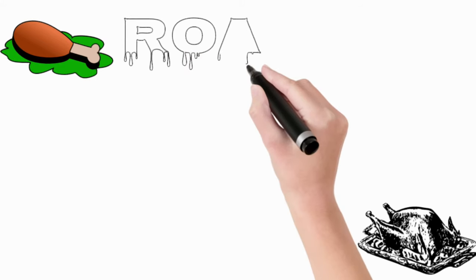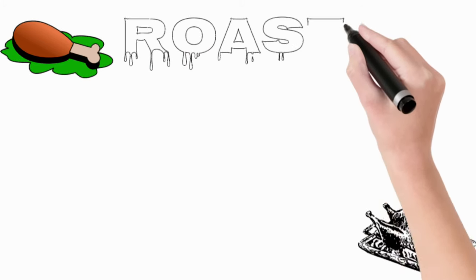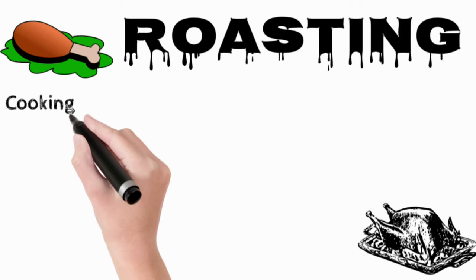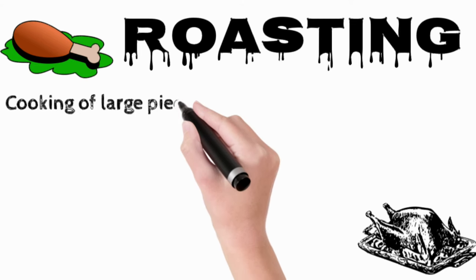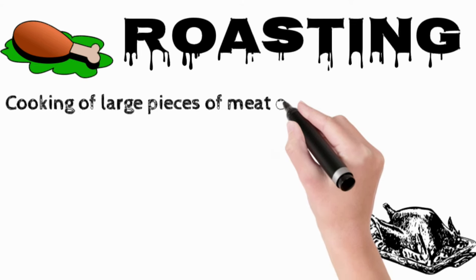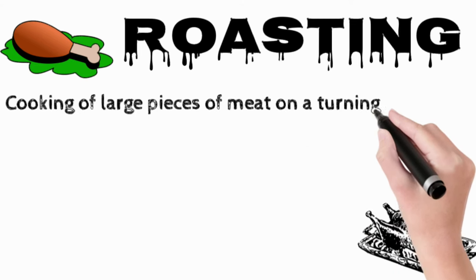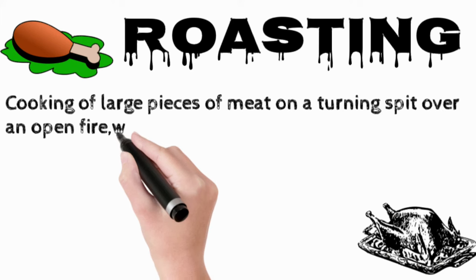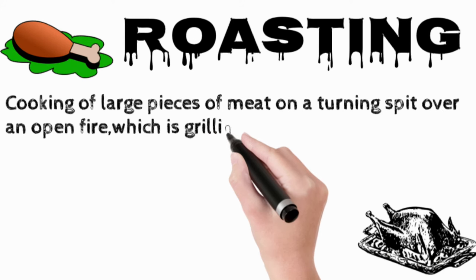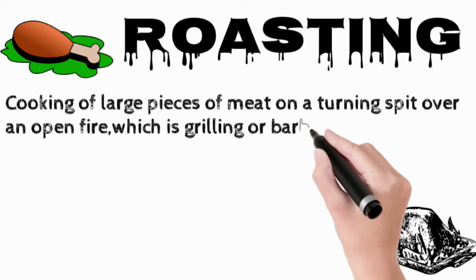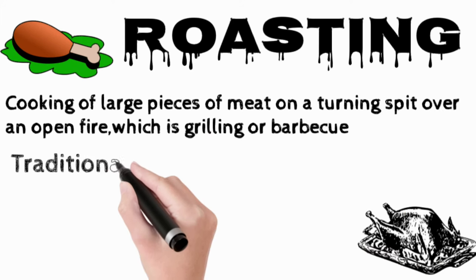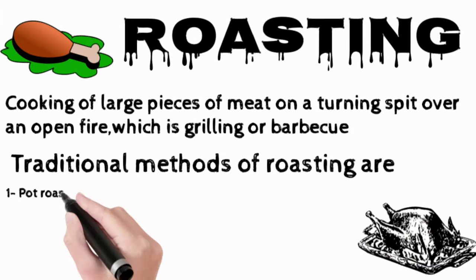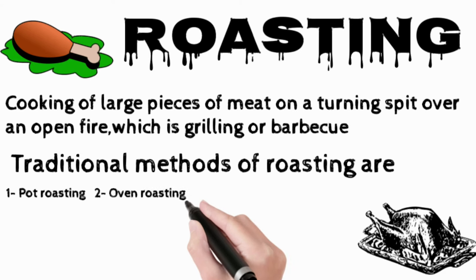Roasting: cooking of large pieces of meat on a turning spit over an open fire, which is grilling or barbecue. Traditional methods of roasting are: one, pot roasting; two, oven roasting; three, spit roasting; four, tandoori method.